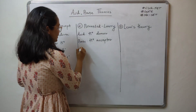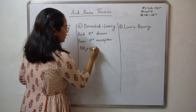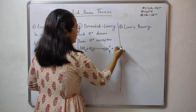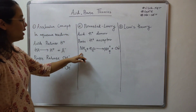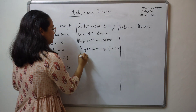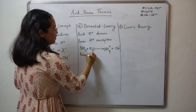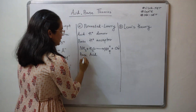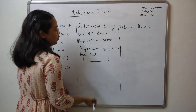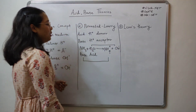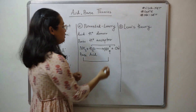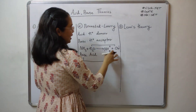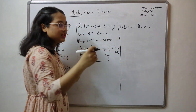Now let us take an example of ammonia with water: NH3 plus water gives NH4+ plus OH minus. NH3 is accepting a proton, so NH3 is acting as a base. Water is donating a proton, so water acts as an acid. Let us identify conjugate acid and conjugate base — check the formula change: NH3 is getting converted into NH4+, and H2O is getting converted into OH minus. Since NH3 is a base, NH4+ becomes the conjugate acid. Since water is an acid, OH minus becomes the conjugate base because it is losing its proton.